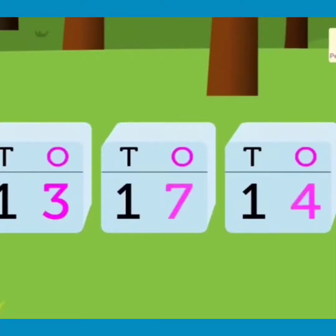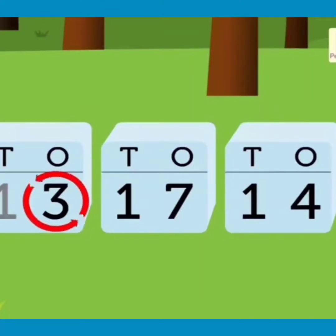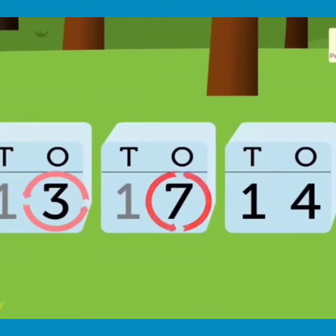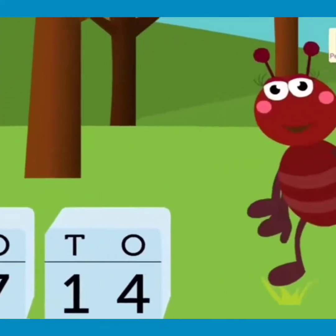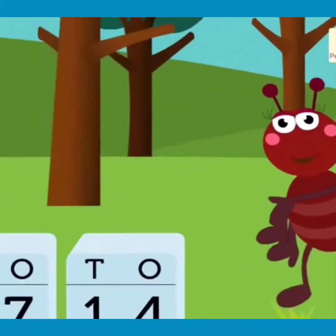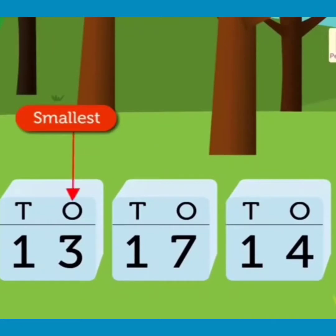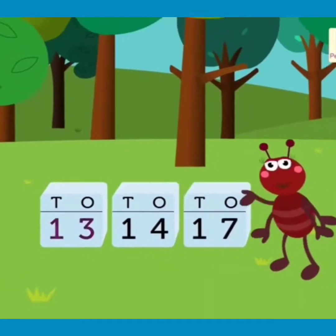Let's compare the ones, as each number has one ten. There are three ones in 13, seven ones in 17, and four ones in 14. So which is the smallest and the greatest here? The smallest is three ones in 13 and the greatest is seven ones in 17. Hence, the ascending order is 13, 14, 17.